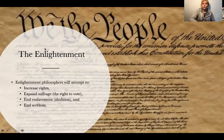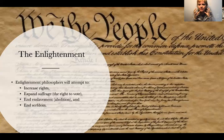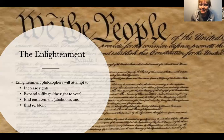One example of an Enlightenment document is the United States Constitution, which we'll talk about a lot in next class. It's a good way to understand what a right is — the U.S. Constitution tells us what we can and cannot do as citizens.